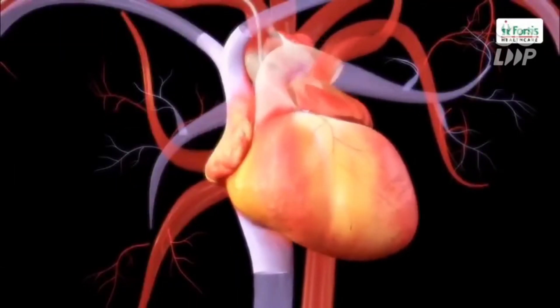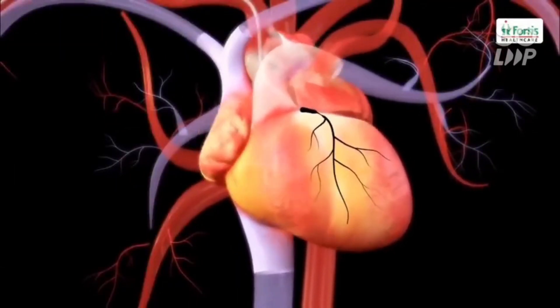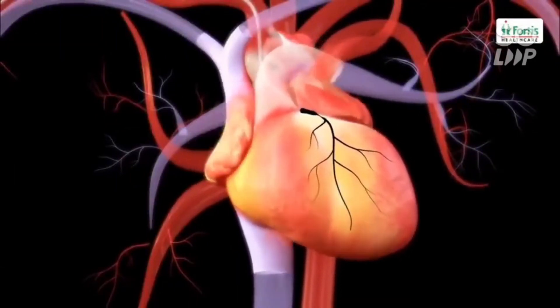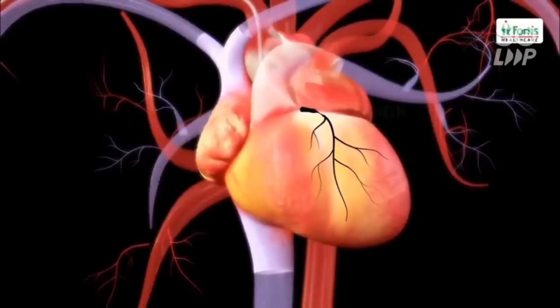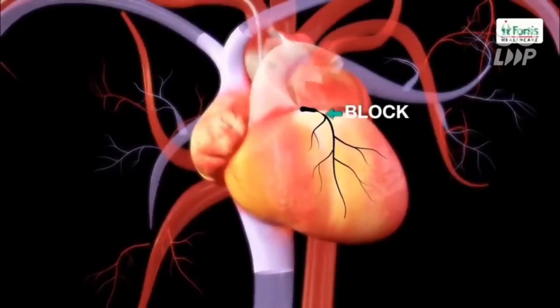A special dye is injected which allows the fluoroscope to take x-ray images of the arterial interiors, helping to identify the position of the blockage.